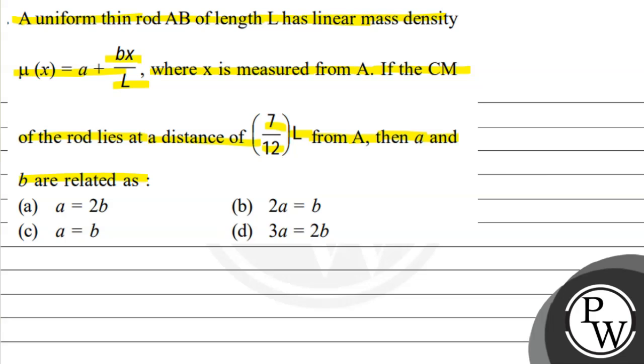So basically, here is a thin rod AB. Let's suppose that in some way, a thin rod has a complete length of L. The center of mass is 7 by 12 times of L.